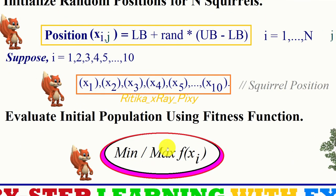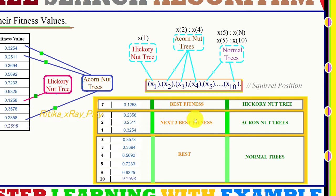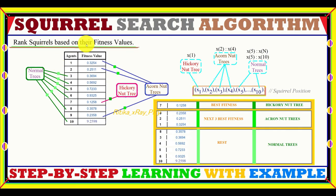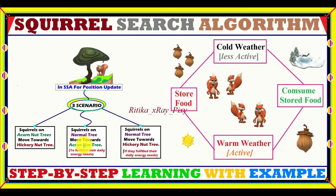For example, with 10 agents: the first agent (best fitness) is the hickory nut tree, agents two to four are acorn nut trees, and agents five to ten are normal trees. We initialize positions for 10 agents, evaluate using a cost function, and sort fitness values in ascending order. After ranking, we check the stopping criteria — if not met, we repeat the loop; otherwise, we display the best solution. In Step 6, we calculate new positions by applying the gliding process across the three scenarios.